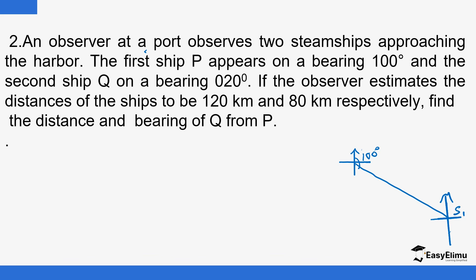So this is the first steamship. So this is the first one, and the first ship, this is now P, so you label it P, appears on a bearing of 100 degrees. The second Q on a bearing of 20, so 20 is just here. So this is where Q is.